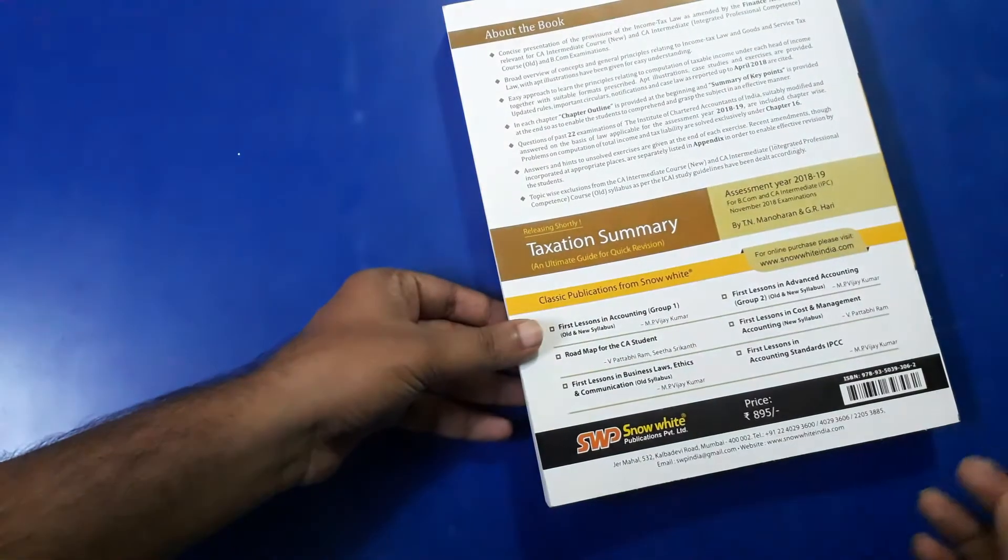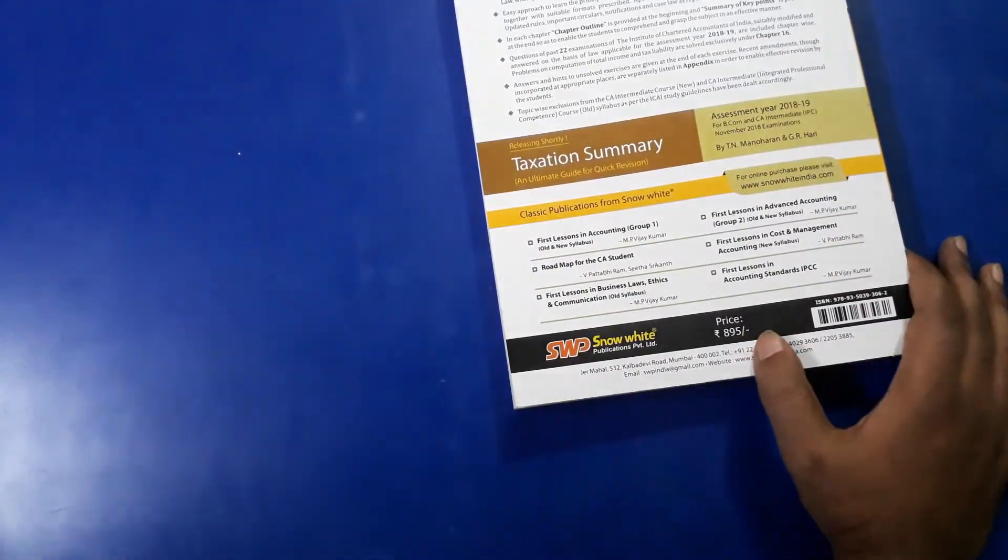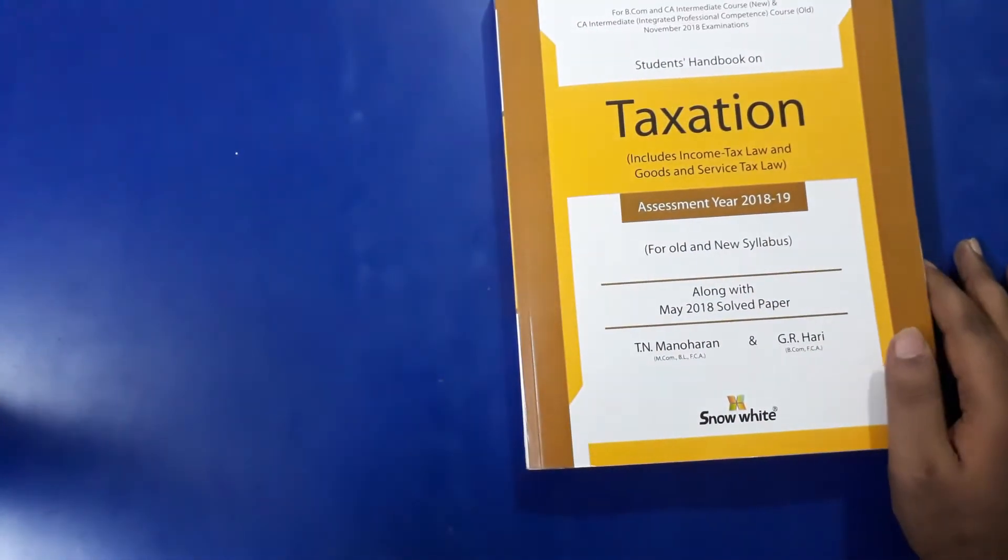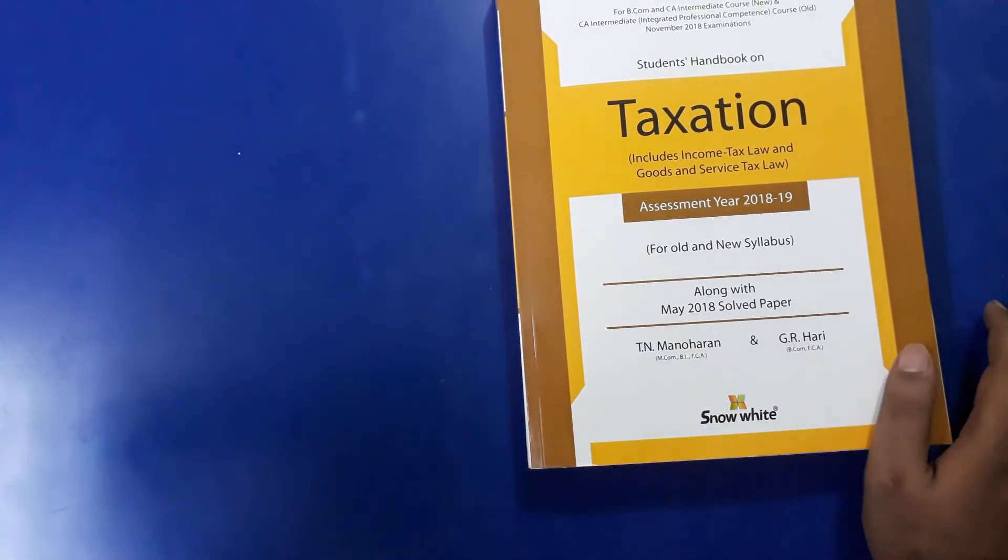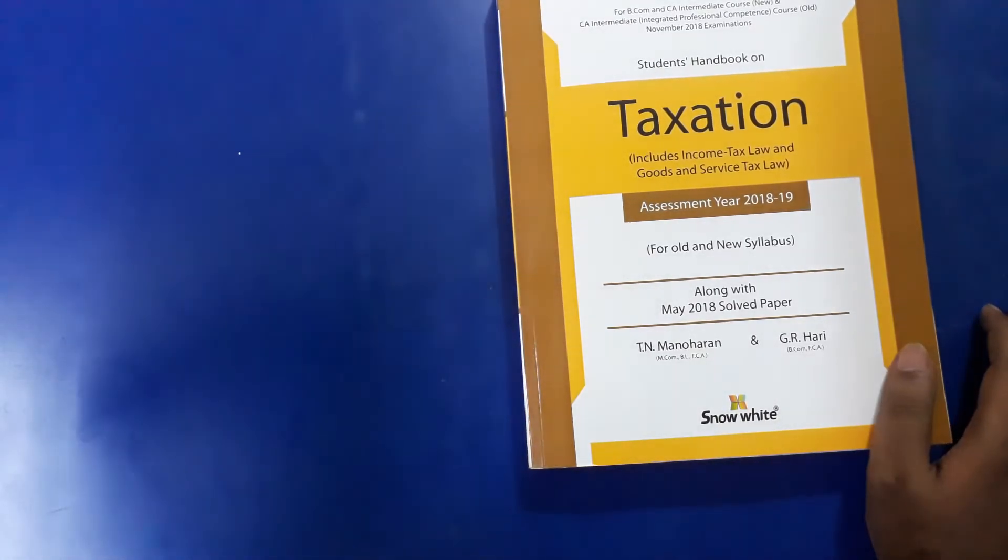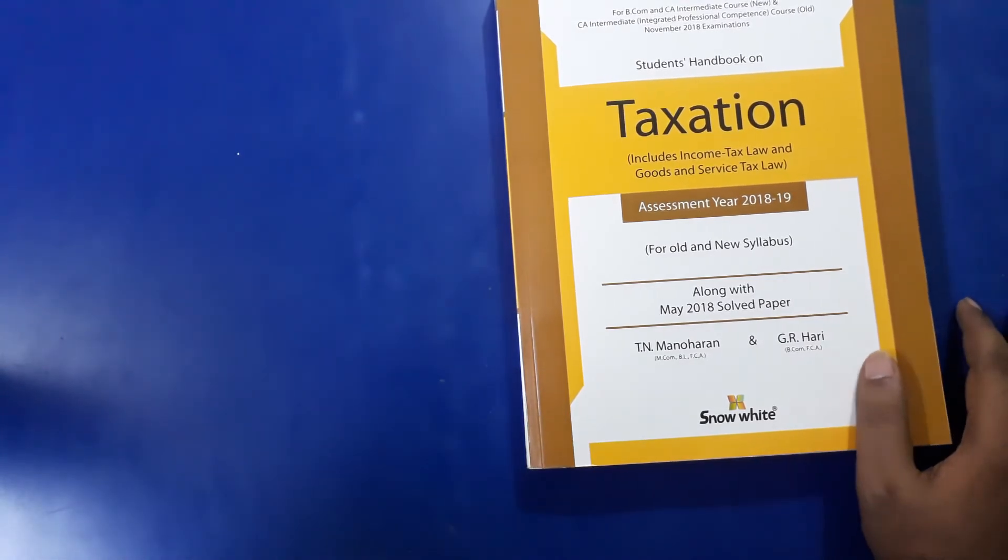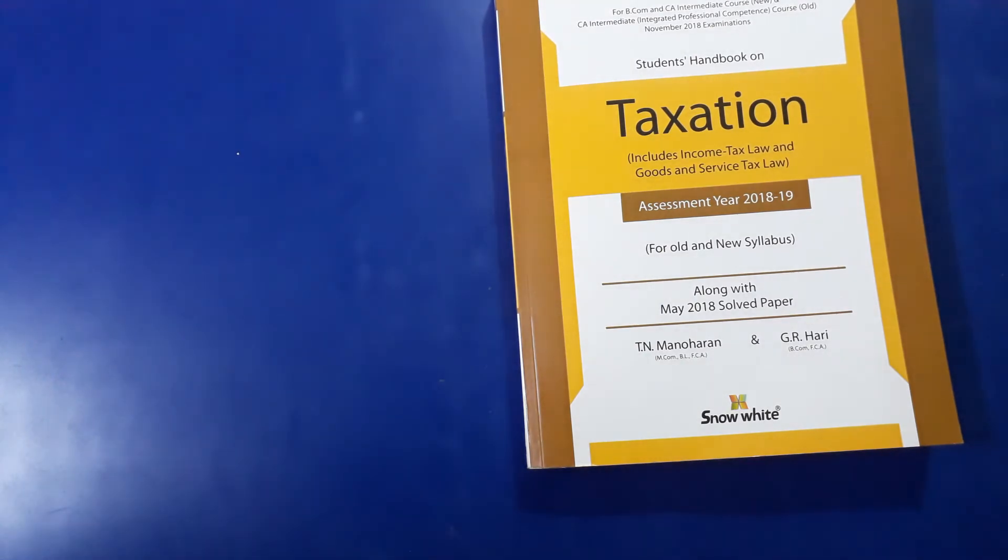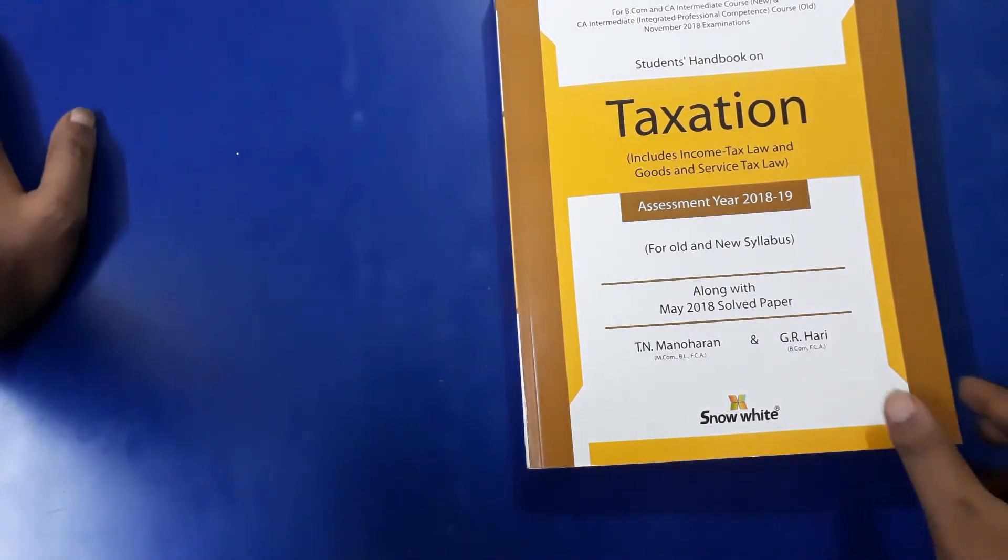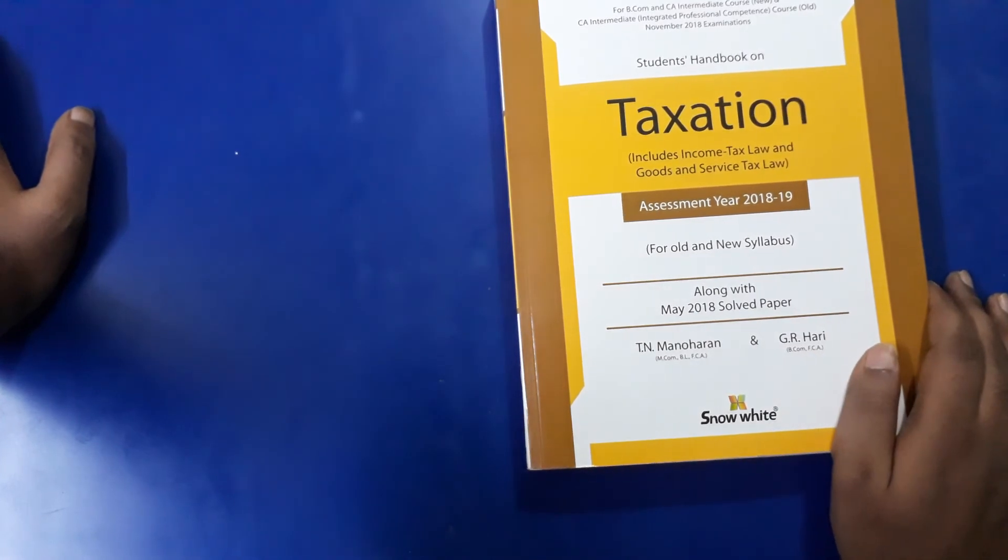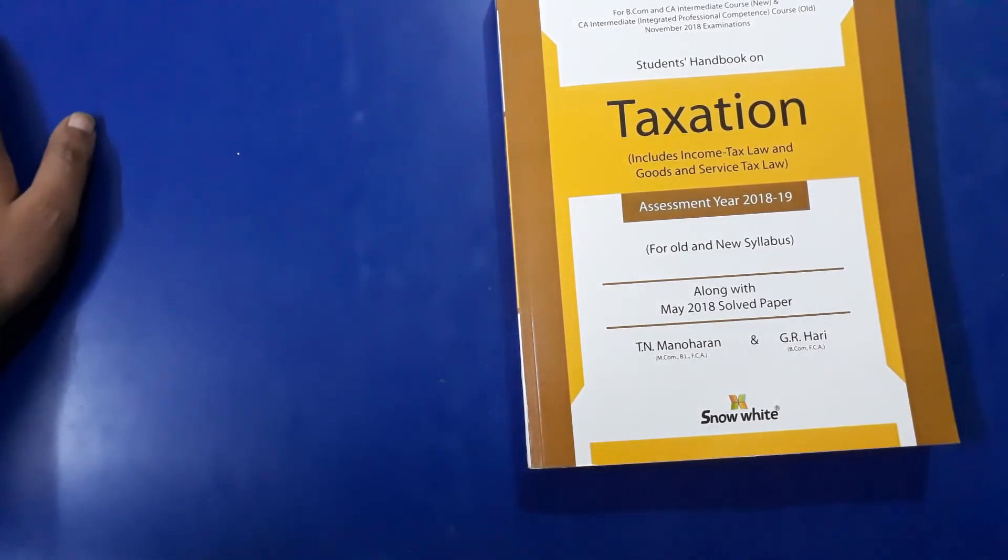The pricing is 895 rupees. Those who have not yet subscribed to the channel, kindly subscribe the channel. I will show you more videos of CA Intermediate books and CA IPC also. It will help you in choosing the better one for you. Thanks, kindly subscribe the channel.